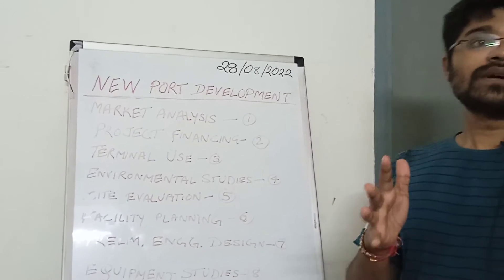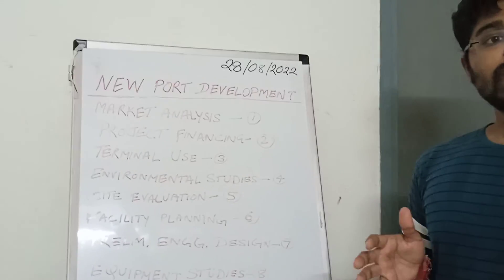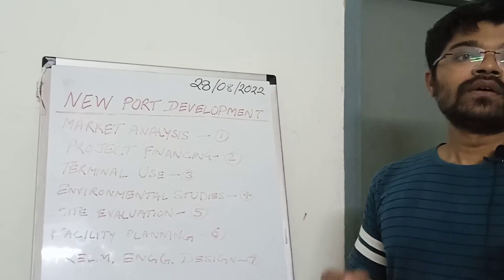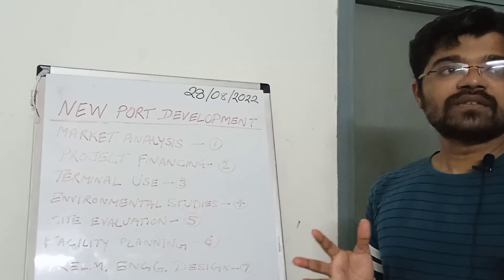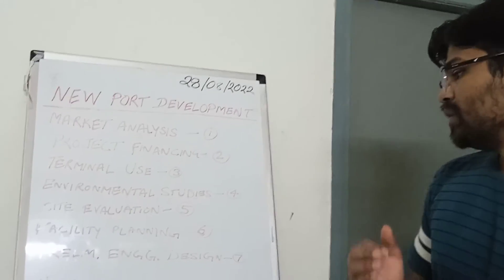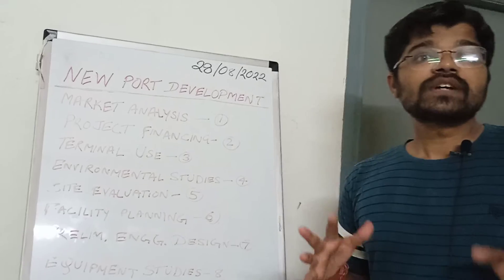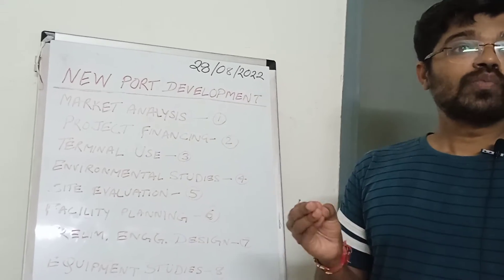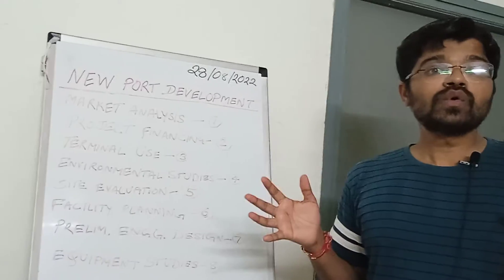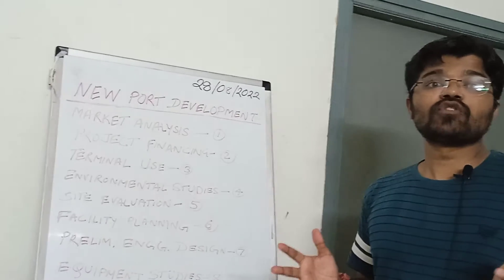Seventh is preliminary engineering design, which covers the basic project layout and engineering design needed to start the operational phase of the port. Eighth is equipment studies — this covers what type of equipment will be used in the port for its operation and overall working.